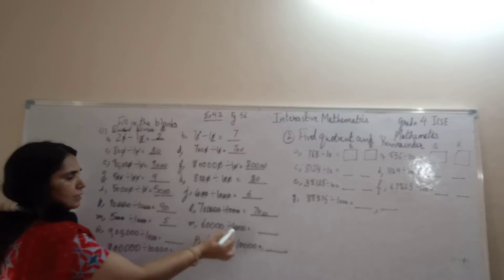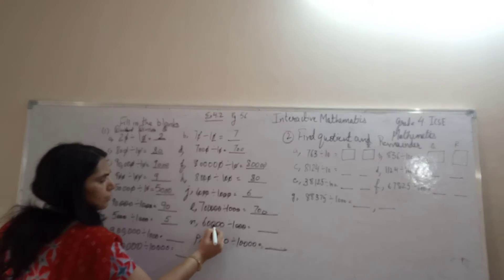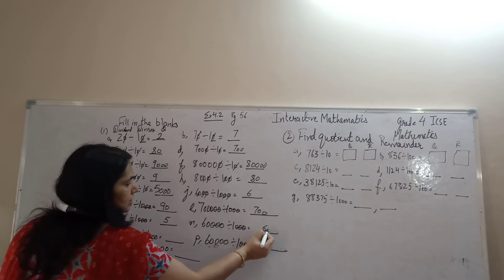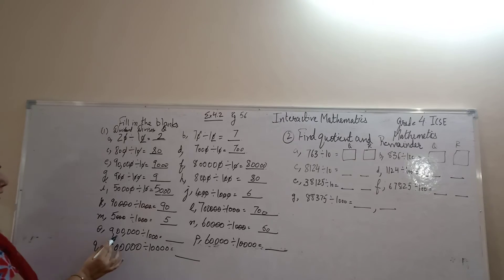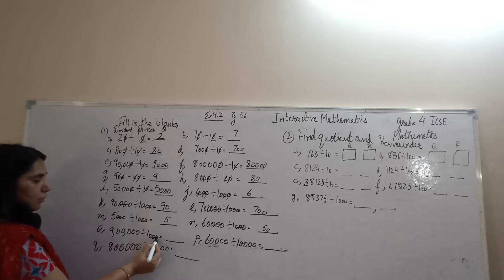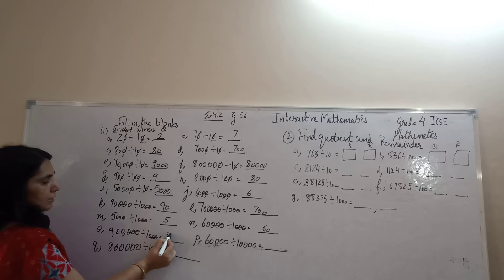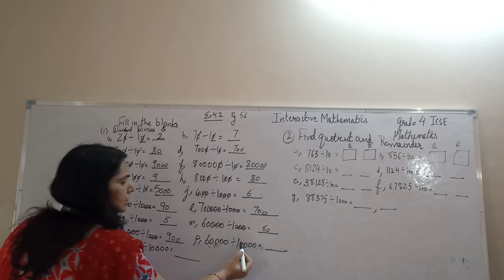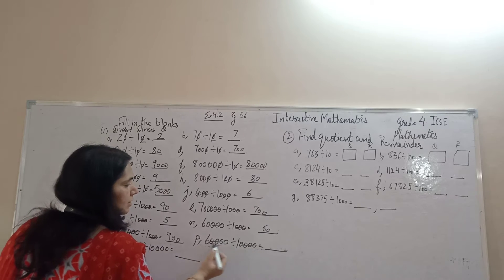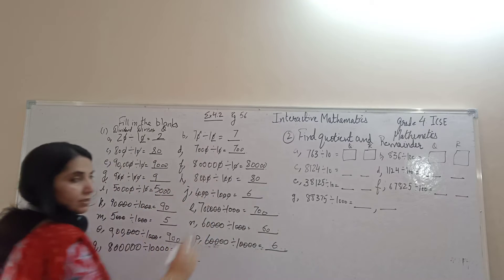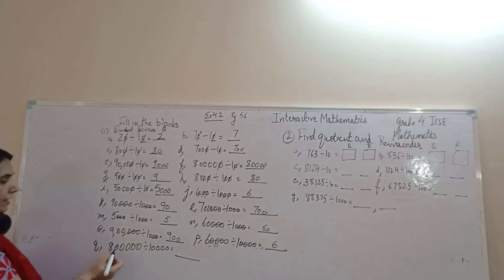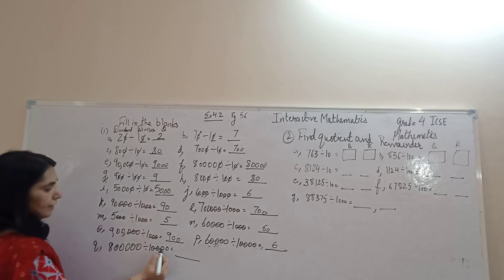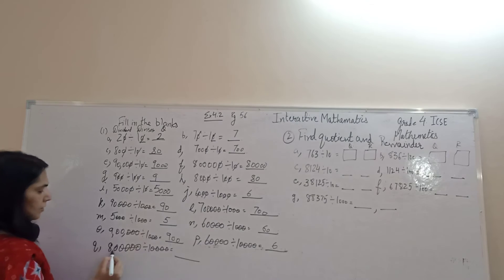60,000 divided by 1000. 3 zeros removed. It is 60. 9,000 divided by 1000. 3 zeros removed. It is 900. 60,000 divided by 10,000. 4 zeros removed. 6. 80,000 divided by 10,000, 8.